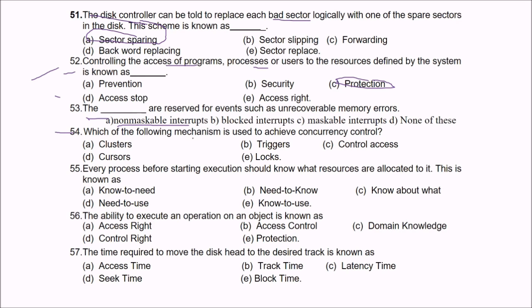Question 54: Which mechanism is used to achieve concurrency control? The answer is the lock mechanism — this is used to achieve concurrency control.